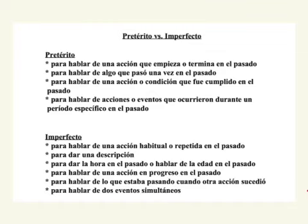Se usa el imperfecto para dar una descripción. Se usa el imperfecto para dar la hora — telling the time — en el pasado, o para hablar de la edad. We're talking about somebody's age in the past.